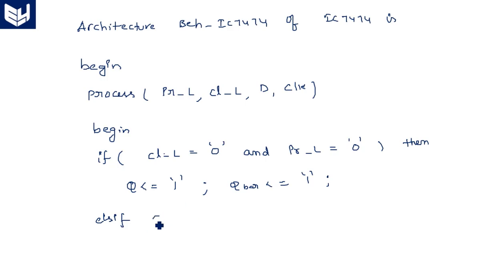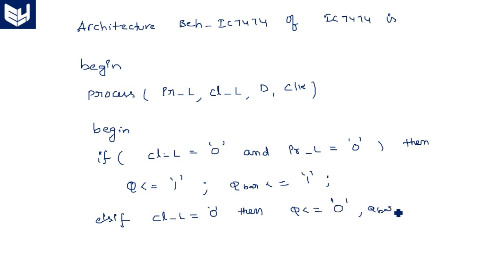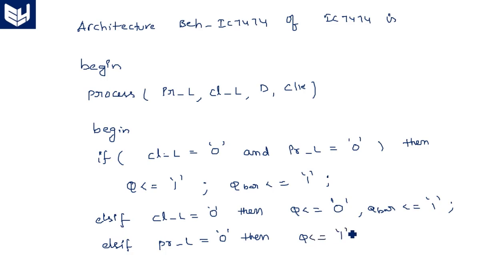Else if clear_l equals 0 — only clear is activated — then Q equals 0 and Q_bar equals 1. Else if preset_l equals 0 — only preset is activated — then Q equals 1 and Q_bar equals 0. These are the normal regular operations: when clear is activated output is 0, and when preset is activated output is 1.